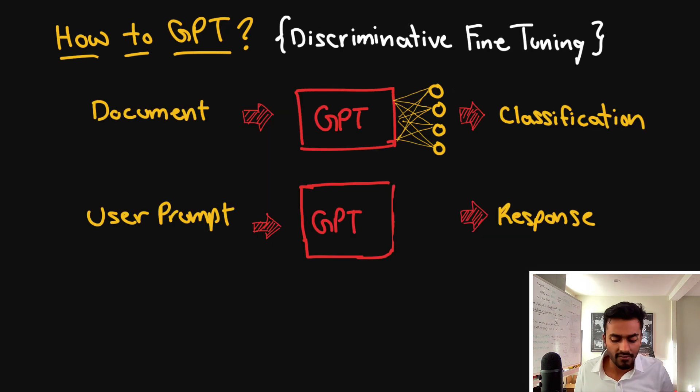Now in the discriminative fine-tuning phase we now have a general model but we want to make it satisfy or solve a very specific problem. For example in document classification simply giving the next word is not enough, we actually want to understand the overall sentiment of the document, of what it represents. Or we want to understand a categorization. Is it a sports document? Is it a news document? Is it some other type of document?